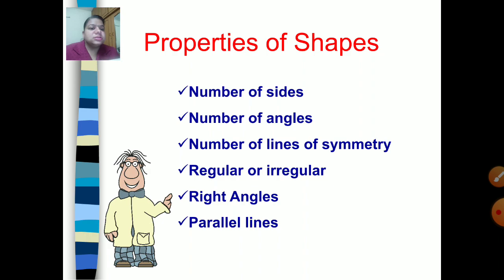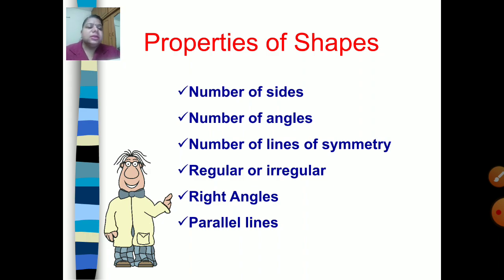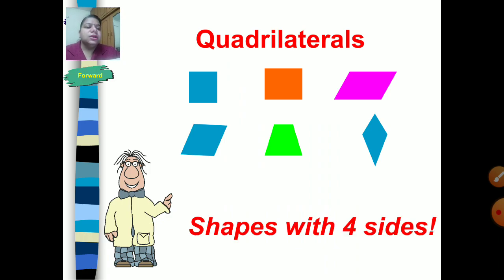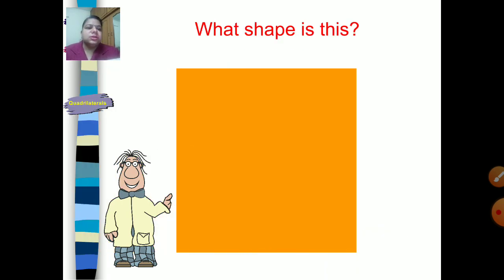A three-sided regular figure is an equilateral triangle — it has three sides and all three sides are the same, and all three angles are also the same. A regular four-sided figure is a square — all four sides are same and all four angles are right angles. We will discuss triangles, quadrilaterals, and different polygons including regular shapes.